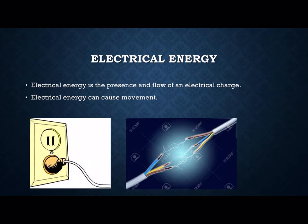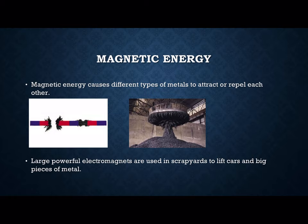Electrical energy is the presence and flow of an electrical charge — it's actually the flow of electrons in a substance. We would need what we call a conductor to allow this to happen, and electrical energy can also cause movement. Magnetic energy can cause different types of metals to either attract or repel each other. Large, powerful electromagnets are used in scrapyards to lift cars and large pieces of metal. The earth's core contains various different metals which are magnetic, so the earth has a magnetic field.